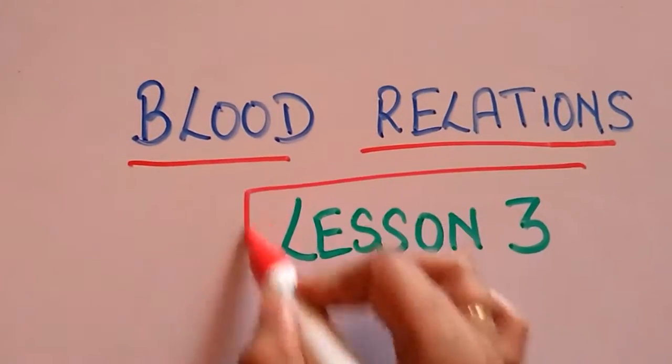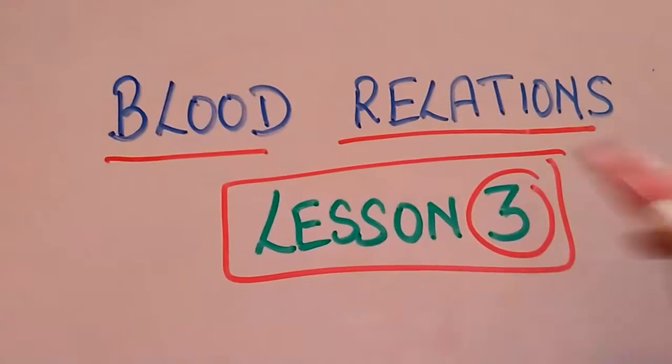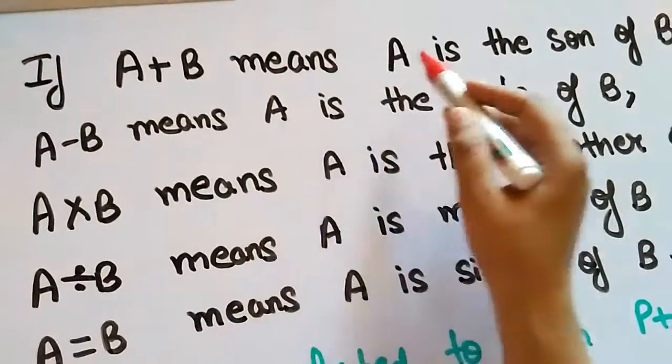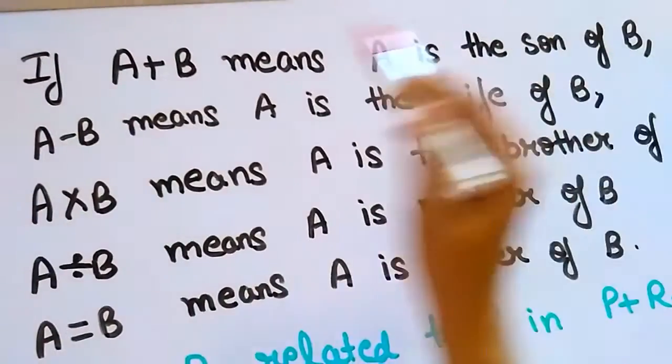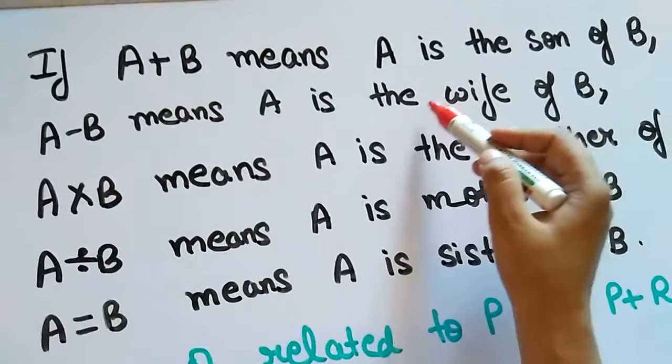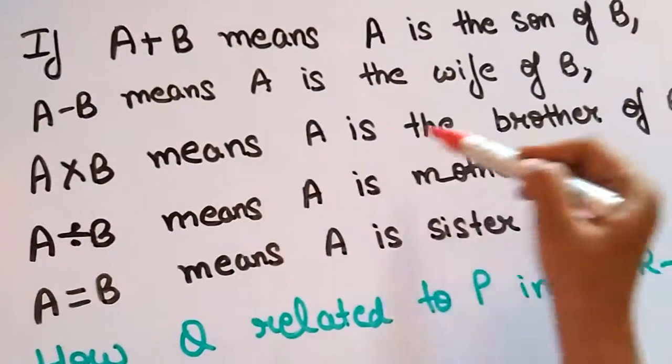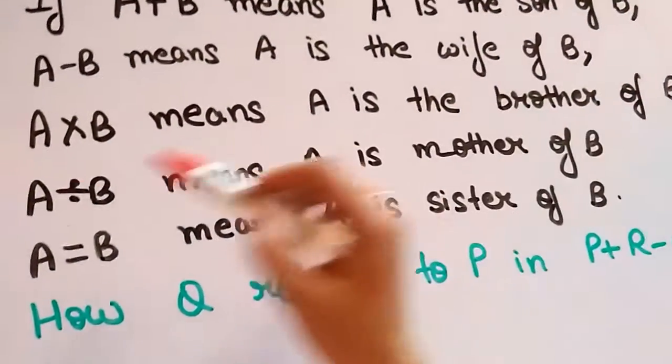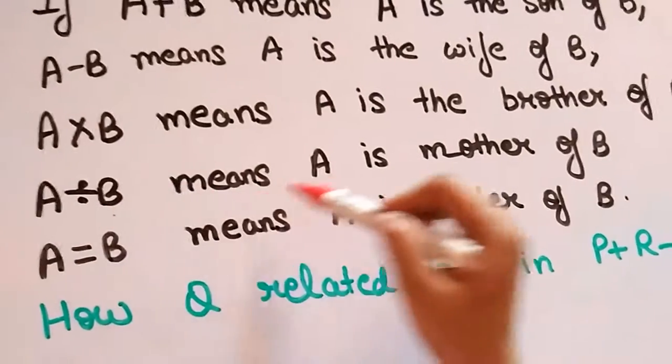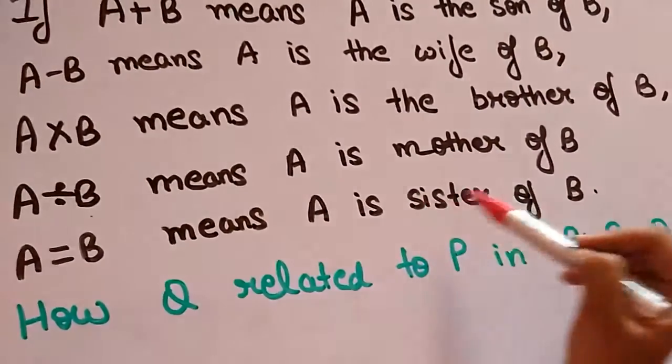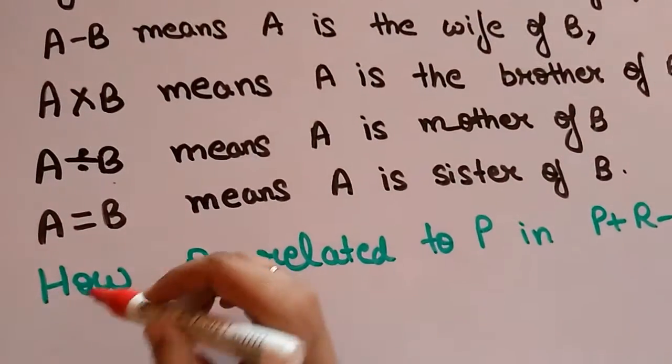Blood relations lesson 3. If A+B means A is the son of B, A-B means A is the wife of B, A×B means A is the brother of B, A÷B means A is the mother of B, A=B means A is the sister of B.